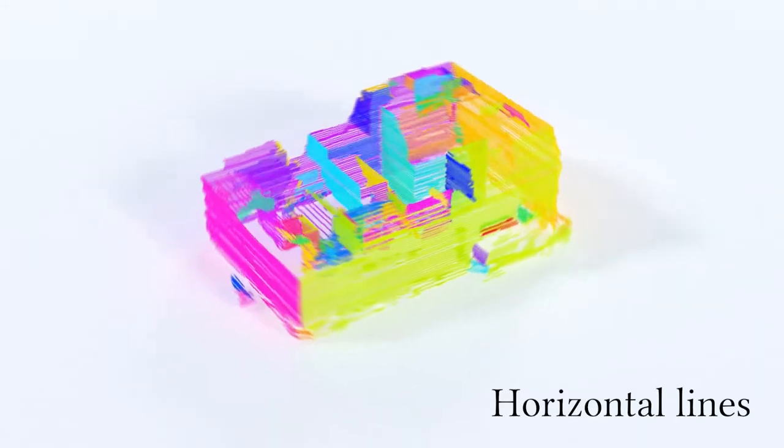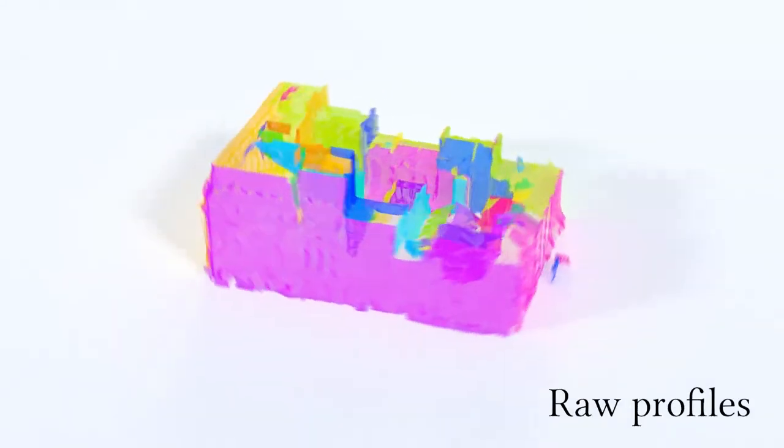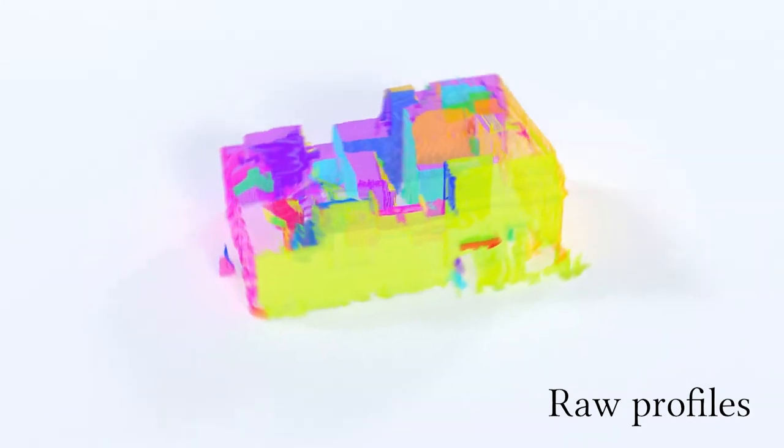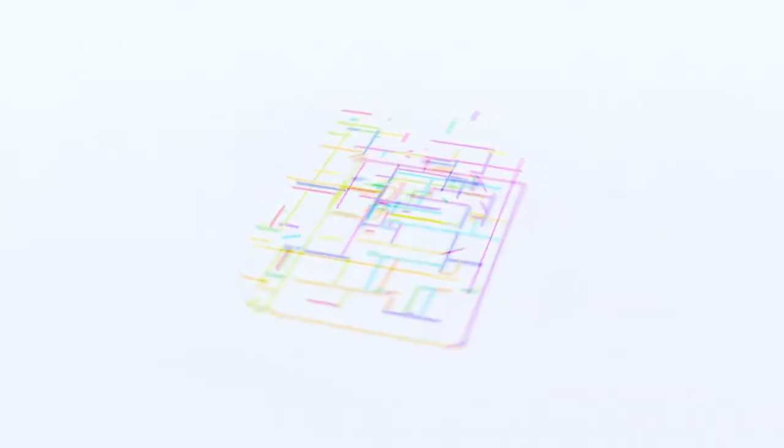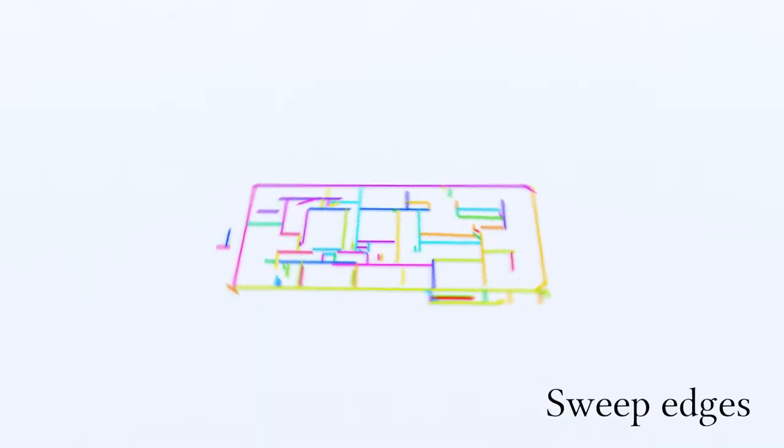We process the mesh and GIS data together. First we find a set of horizontal lines and regularize them using the GIS information. Clusters of horizontal lines are used to find sets of raw profiles. The seed lines of the horizontal line clusters are projected onto the ground plane to create sweep edges.